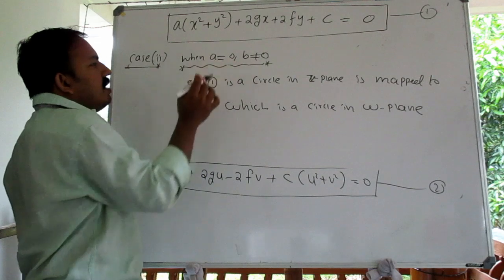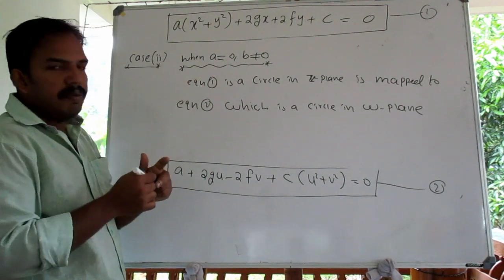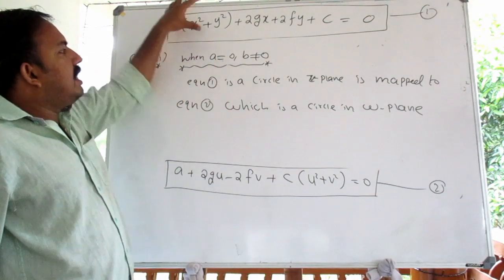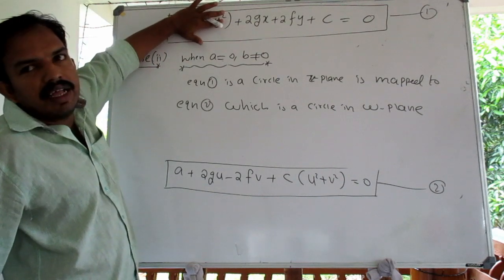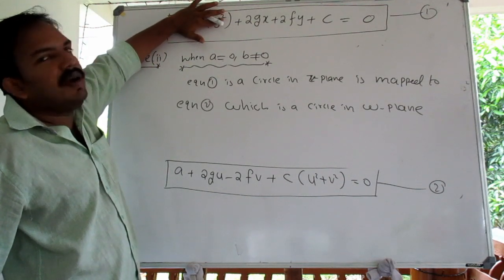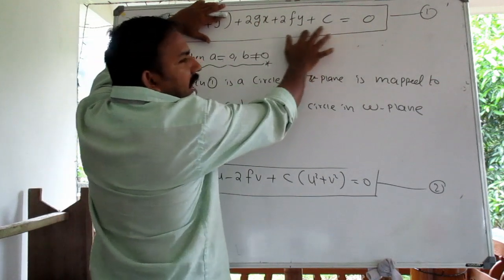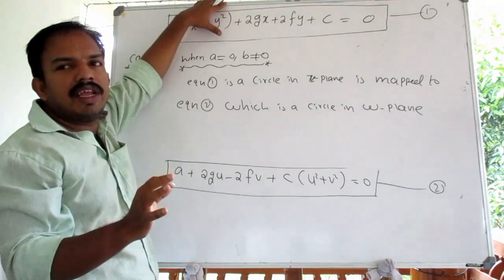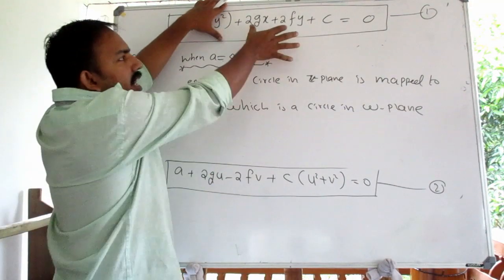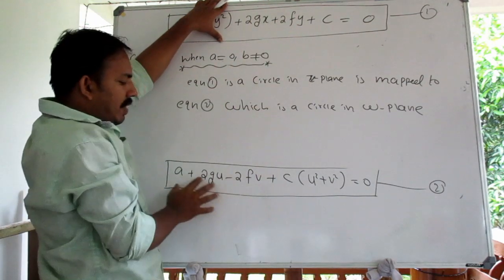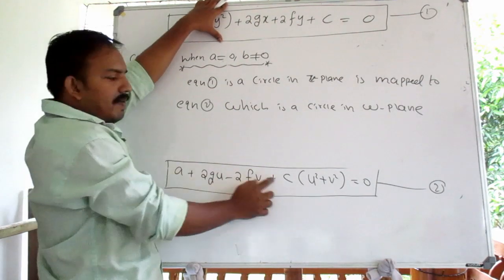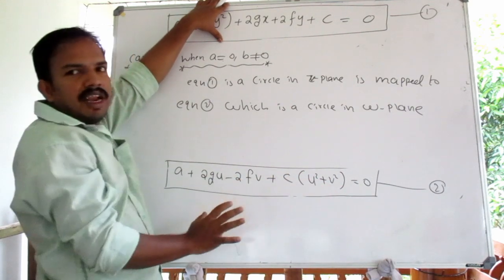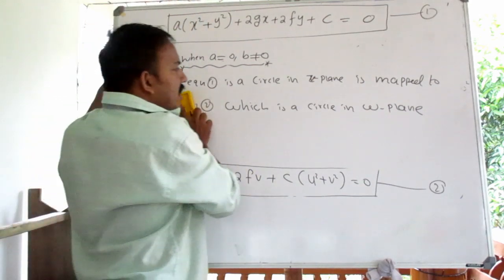Case 2: When a is equal to zero, the equation becomes linear in x and y, which represents a straight line. If the straight line passes through the origin (c = 0), it maps to a straight line in the w-plane. If it does not pass through the origin, it maps to a circle in the w-plane.